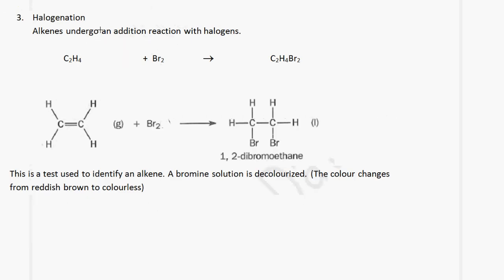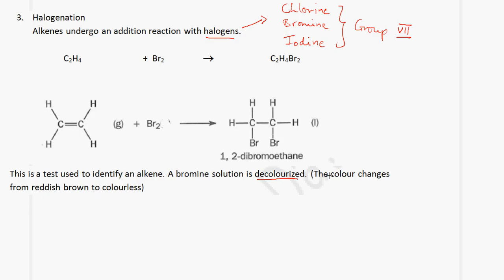The next type of reaction is halogenation. Alkenes undergo addition reactions with halogens — when we speak about halogens, we are referring to chlorine, bromine, and iodine, essentially group seven elements. In this example, ethene reacts with bromine to give us 1,2-dibromoethane. This is a test used to identify an alkene: a bromine solution is decolorized — the color changes from reddish-brown to colorless. This type of reaction is an addition reaction.